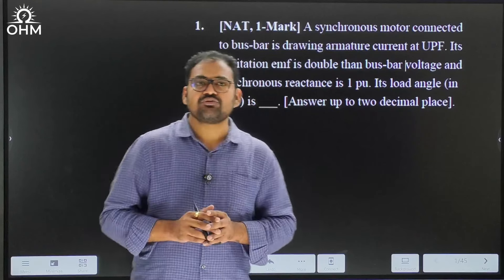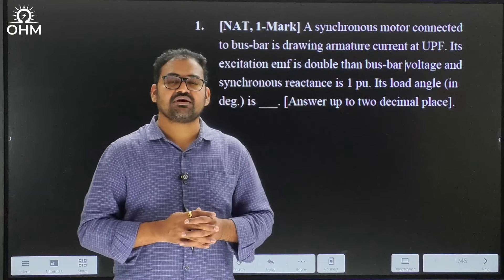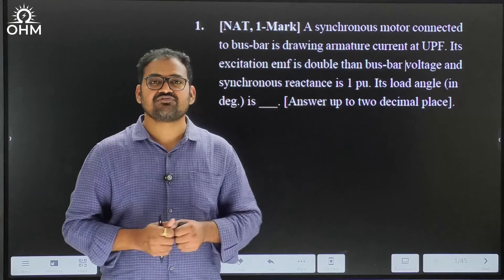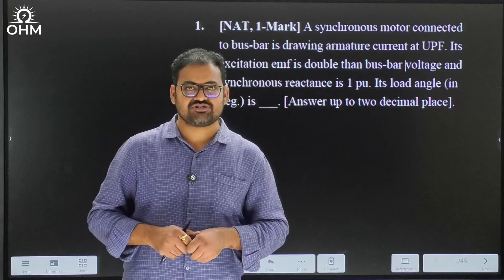In Ohm Institute, for every subject we conduct a class test. This particular class test consists of 13 questions and the examination is for 20 marks. There are around seven two-mark questions consisting of 14 marks and six one-mark questions consisting of 6 marks — overall a 20-mark examination. Once the subject preparation is completed, writing an examination gives you inputs on which areas you are performing well and which concepts you are unable to solve.